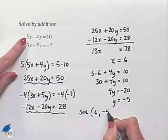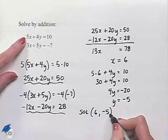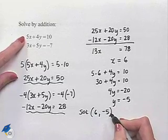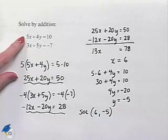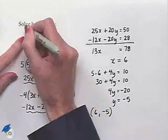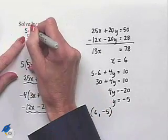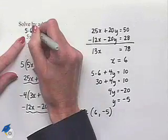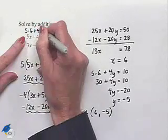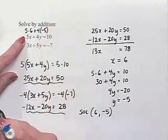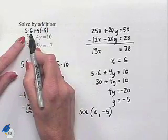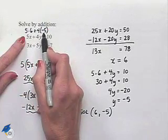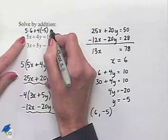(6, -5). We can substitute into the original equations in order to check. Let's do that now. We're going to have 5(6) + 4(-5). Let's just do this mentally. We're going to have 5 times 6 is 30, plus 4 times -5 is -20. That's going to give us 30 + (-20), which equals 10.